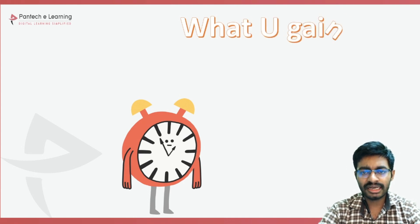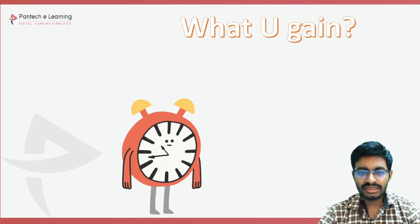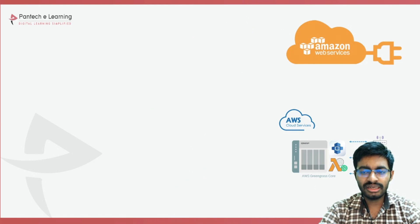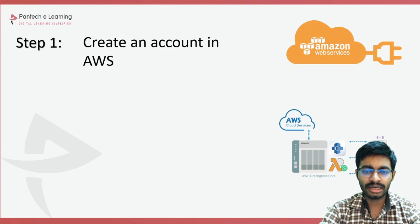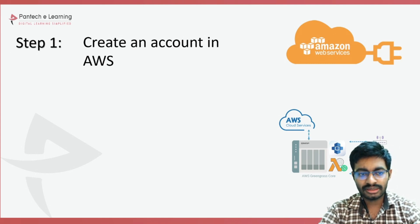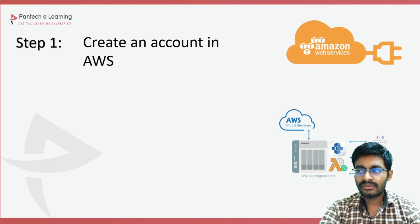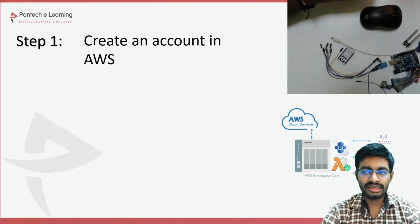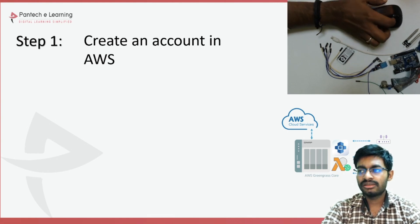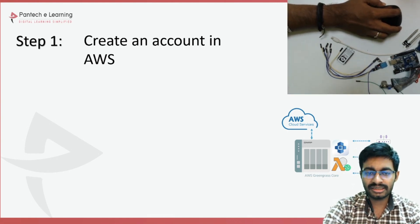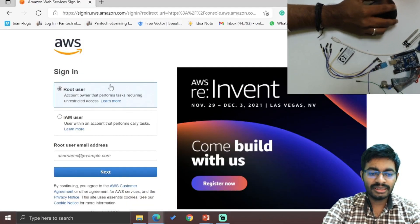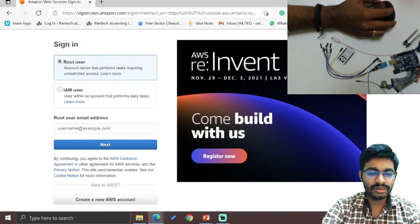From AWS, we are going to focus only on one particular part known as IoT Core. The steps to be followed are: first, create an account in AWS — that is the first and foremost thing. Creating it requires a debit card or credit card. I have already created an account, and hereby I am just logging in.